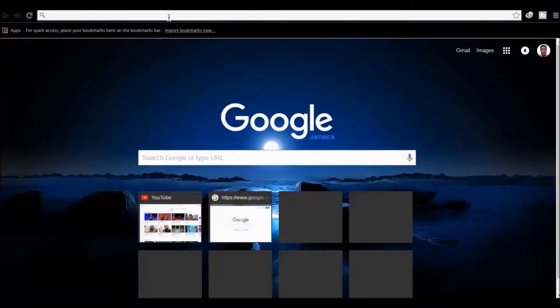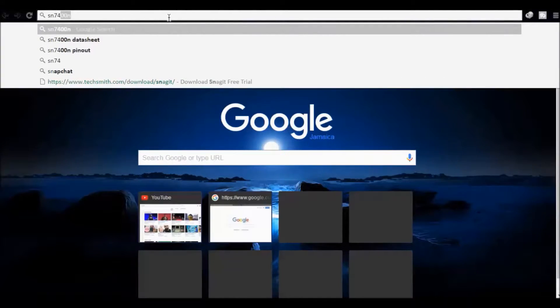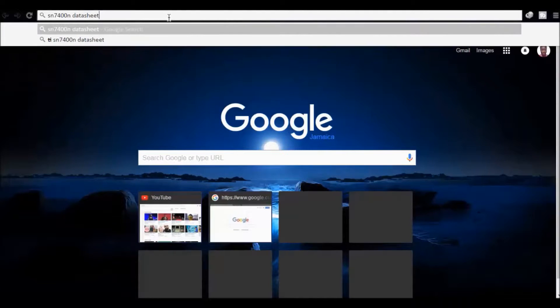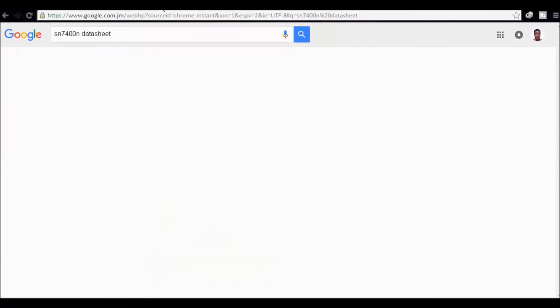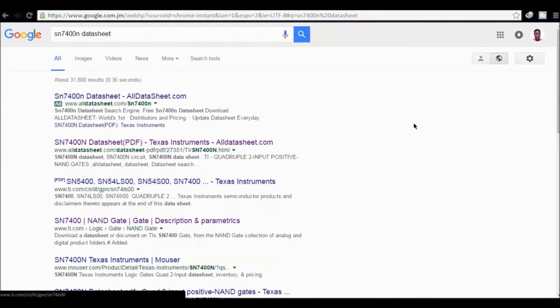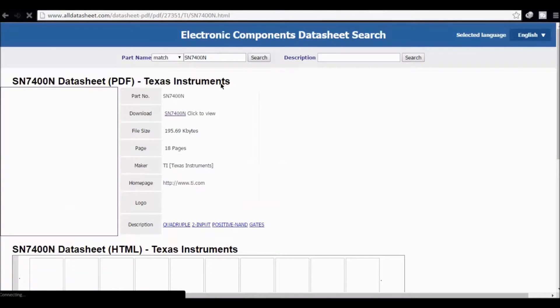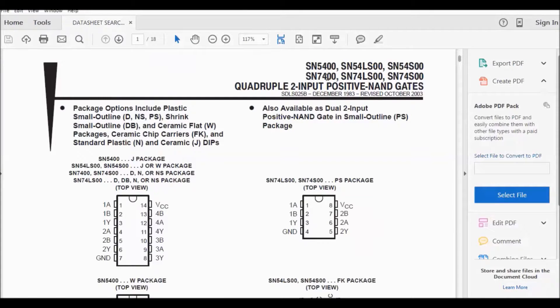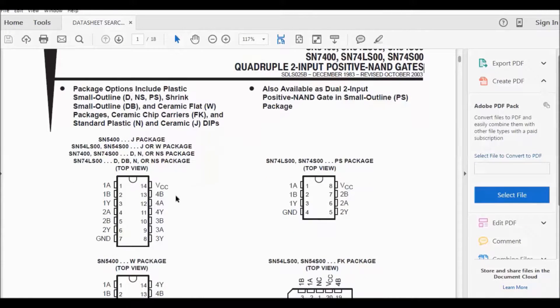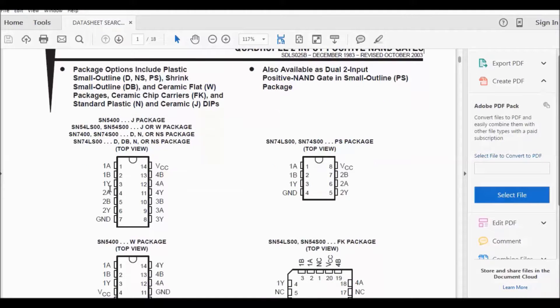So, we can do a Google search for the part number. That's SN7400N. We can now click the second link, and it should open up the website. I have already downloaded the PDF, so we can view it locally on this machine. So, this is the data sheet, and it actually says that the device is a quadruple, two-input positive NAND gate.